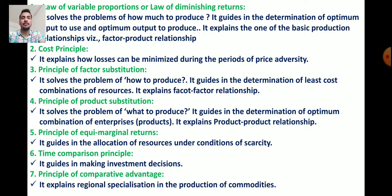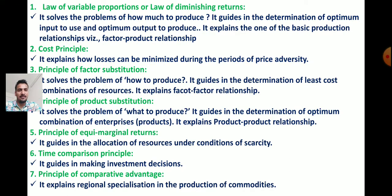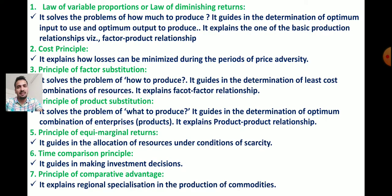The fifth principle, equi-marginal returns, guides the allocation of resources under conditions of scarcity. The sixth, the time comparison principle, guides investment decisions — when to make an investment at a particular time. The seventh, the principle of comparative advantage, explains regional specialization in the production of commodities, identifying which commodity has a comparative advantage over another.